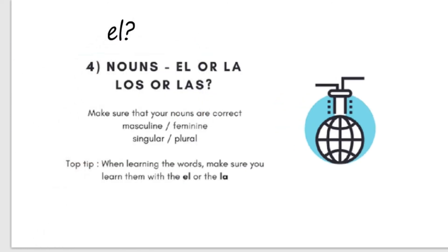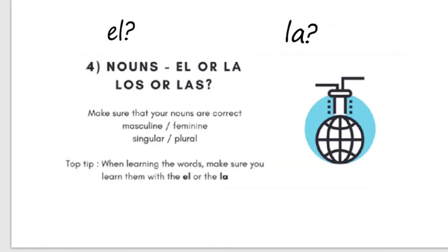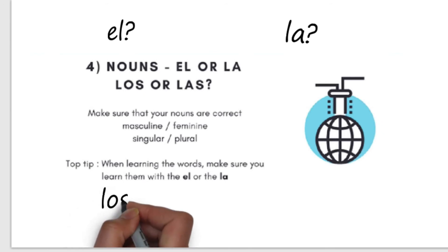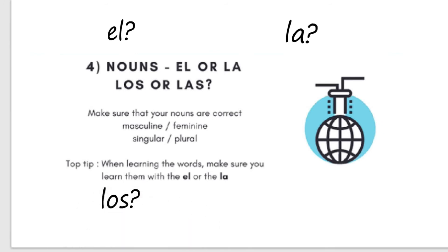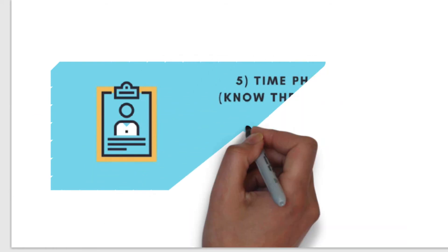Point four: nouns. Are they el, la, los, or las? Do you know your el from your la, your los from your las? If you don't, you're likely not to score as well as somebody who does. So learn your words with el, la, los, and las.